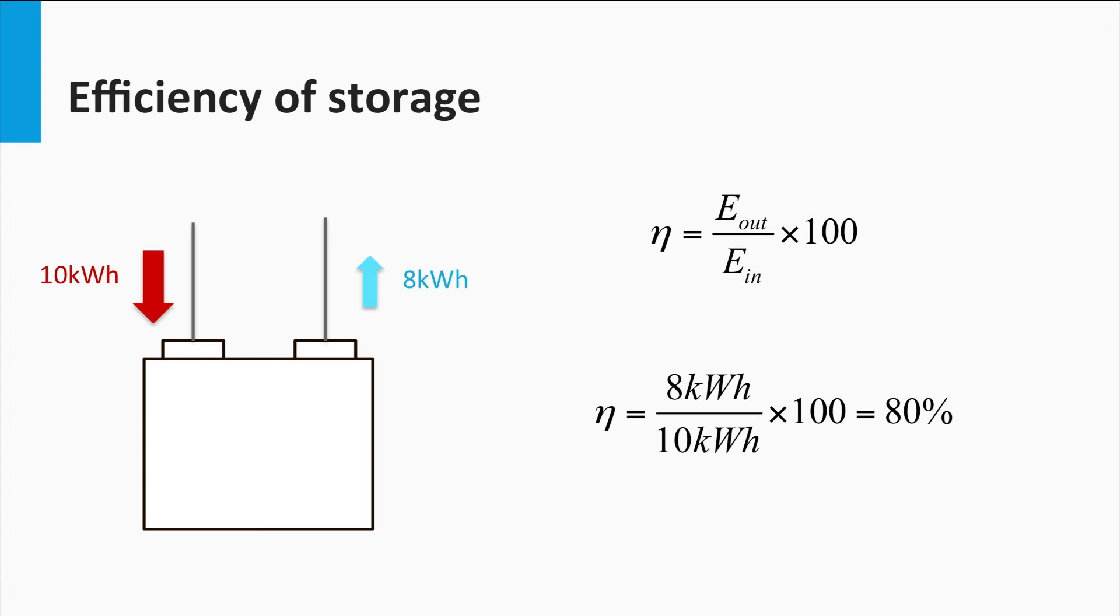In simple terms, it is the ratio of total storage system input to the total storage system output. For example, if 10 kWh is pumped into the storage system while charging, and you can effectively retrieve only 8 kWh while discharging, then the round-trip efficiency of the storage system is 80%.